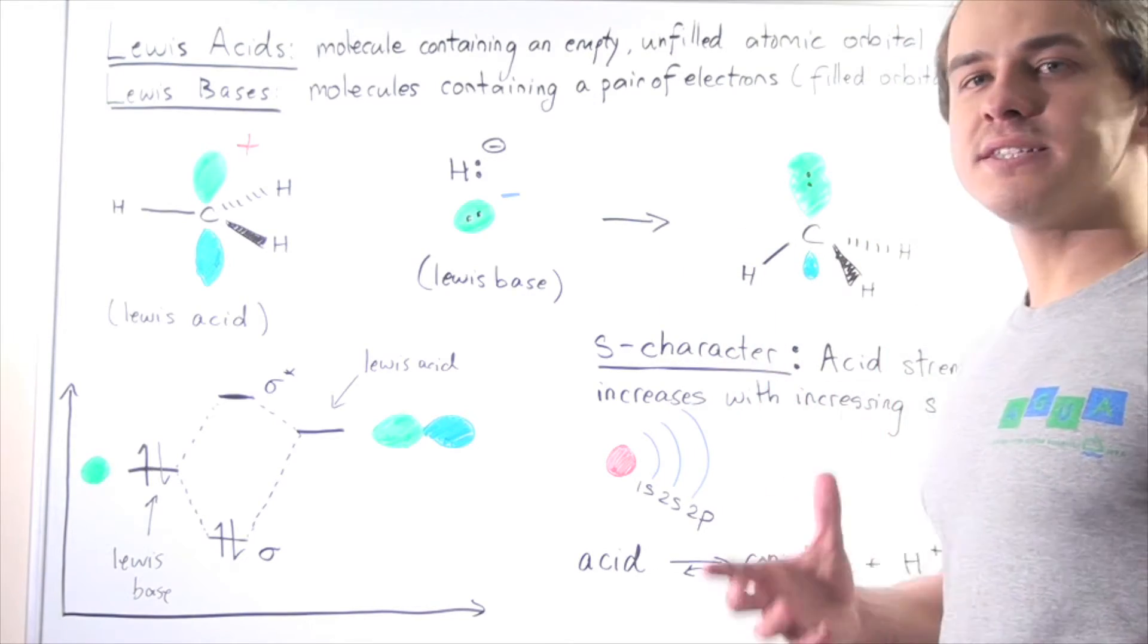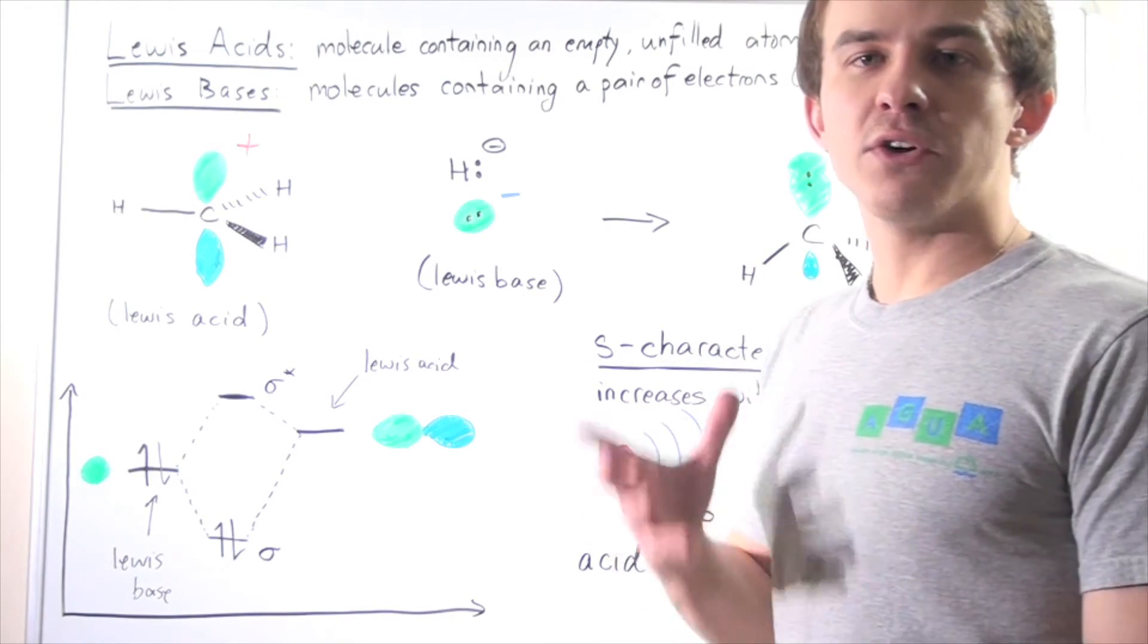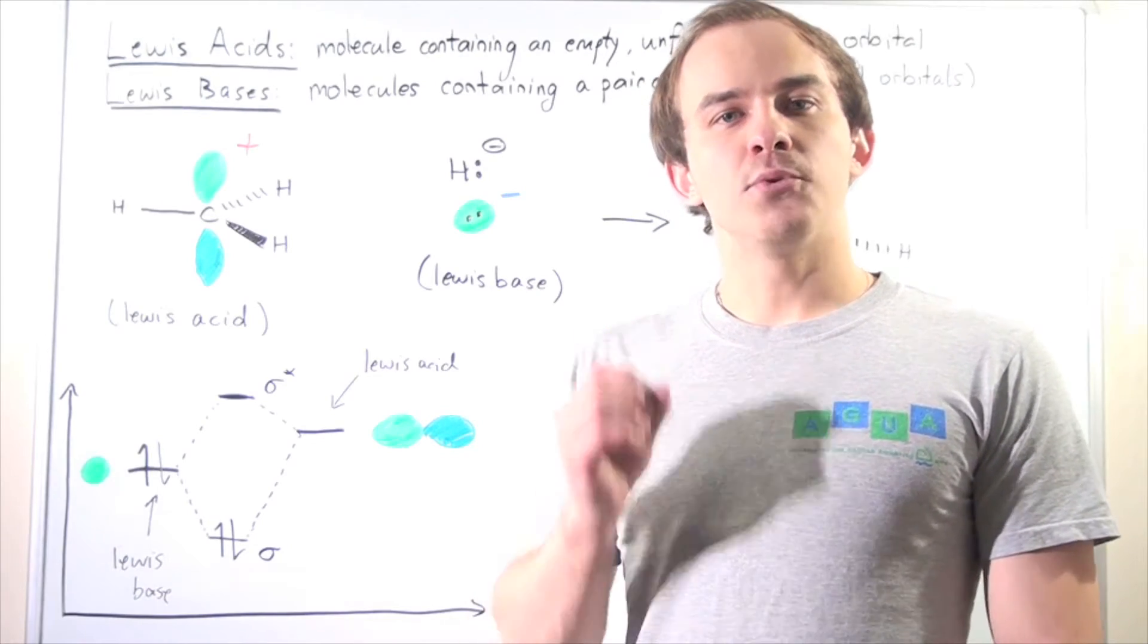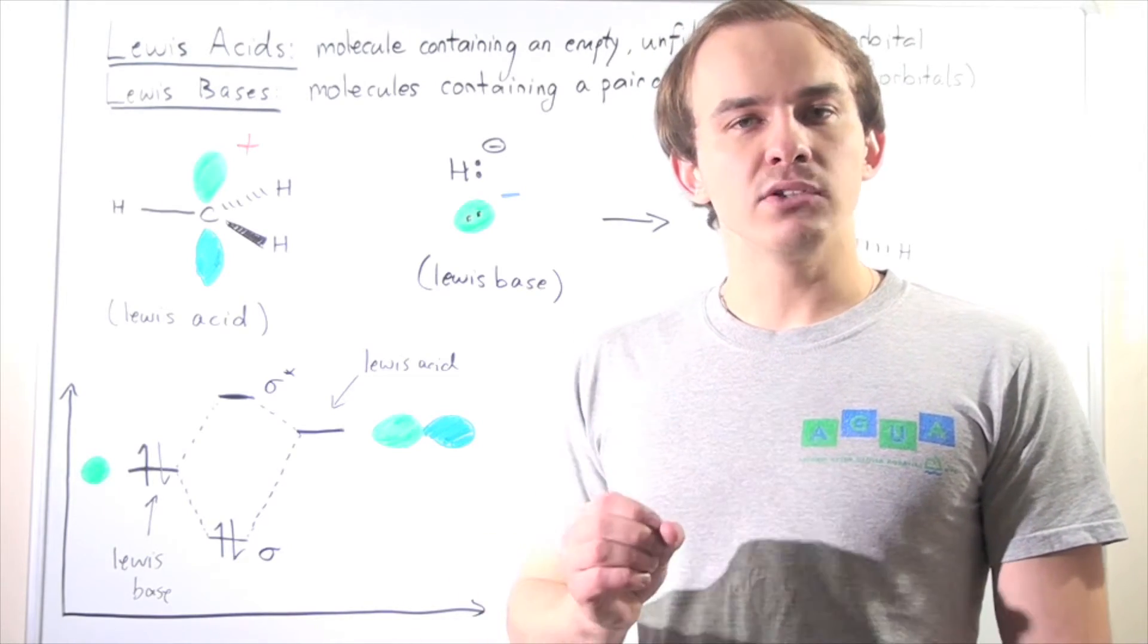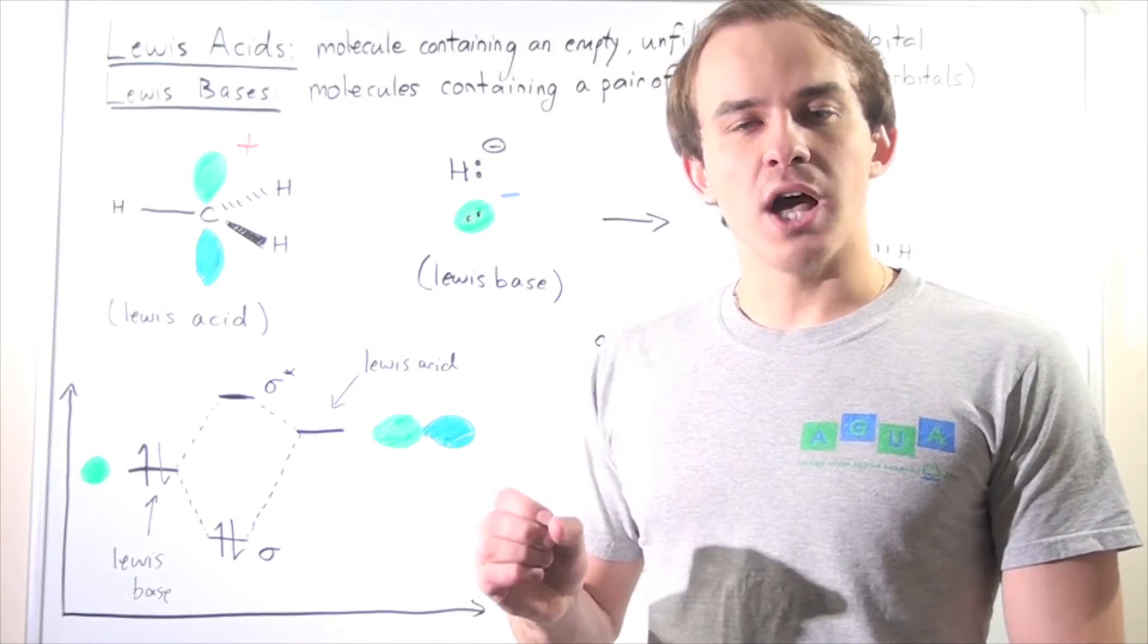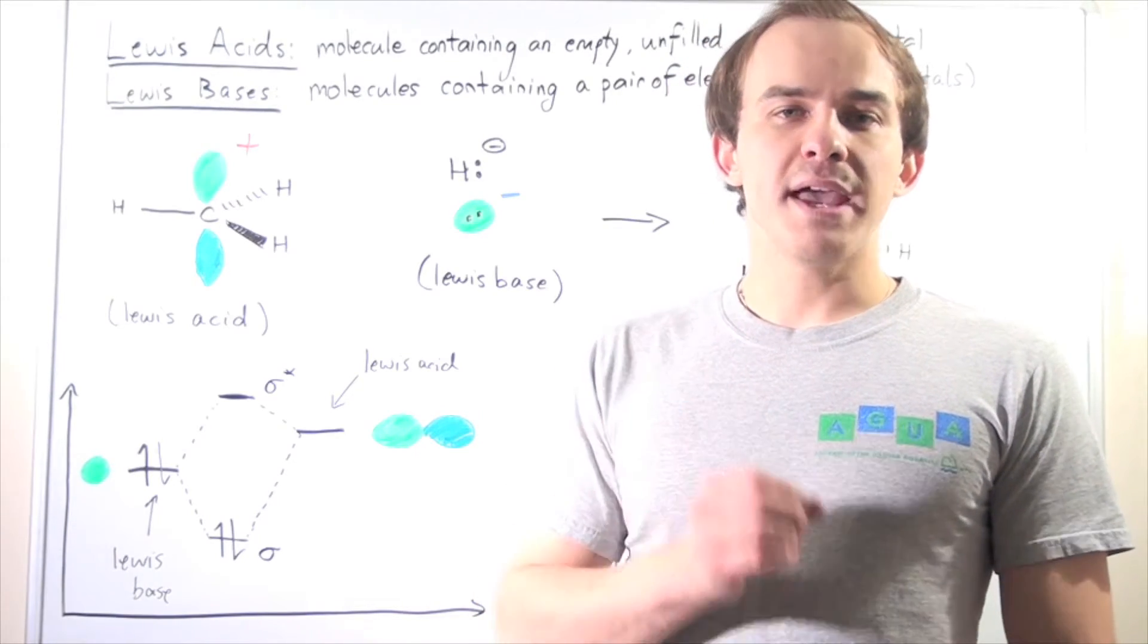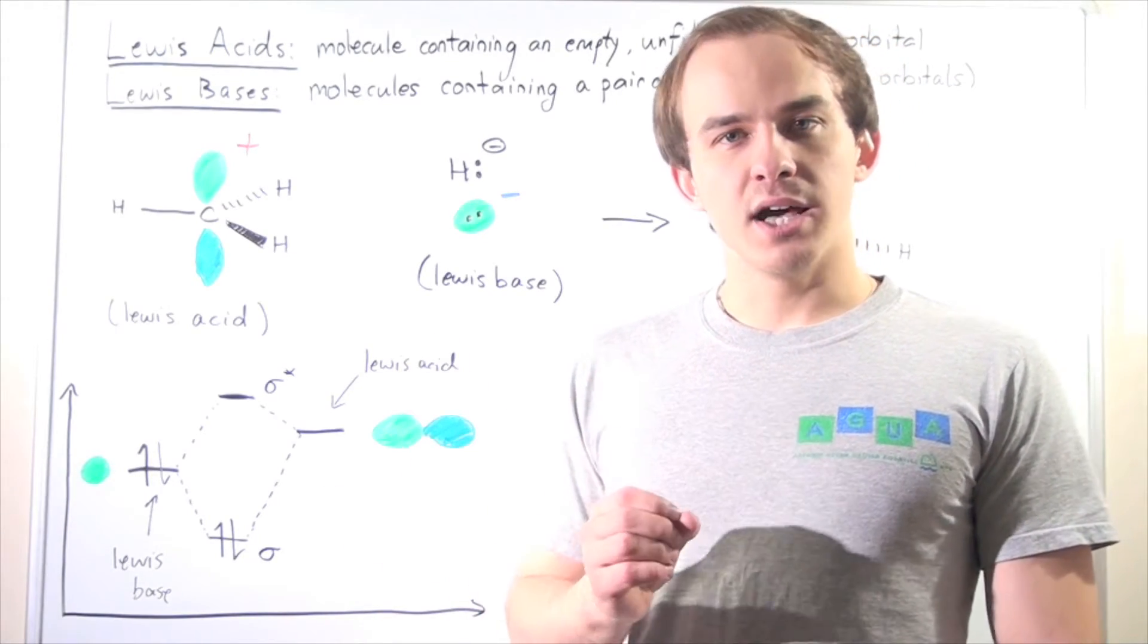Now let's define what a Bronsted-Lowry acid and a Bronsted-Lowry base is. A Bronsted-Lowry acid is a molecule that donates an H ion, while a Bronsted-Lowry base is a molecule that accepts an H ion.